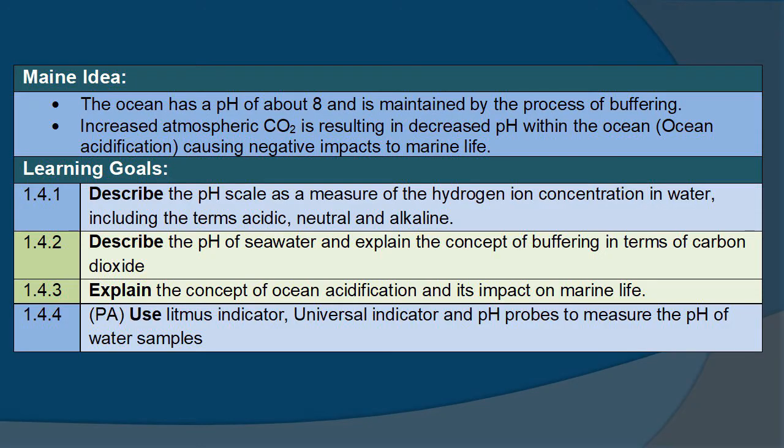Here are our main ideas. The ocean has a pH of about 8 and is maintained by the process of buffering. Increased atmospheric CO2 is resulting in decreased pH within the ocean, otherwise known as ocean acidification, causing negative impacts to marine life.